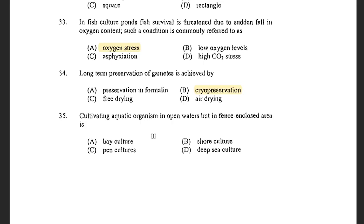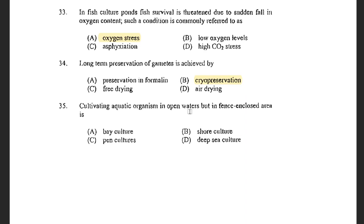Next question: Cultivating aquatic organisms in open water but in a fence-enclosed area is known as — options are bay culture, shore culture, pen culture, and deep sea culture. The answer is pen culture.